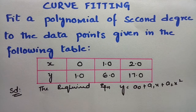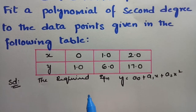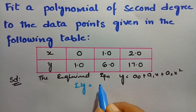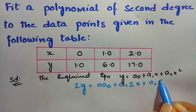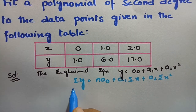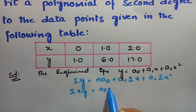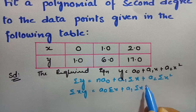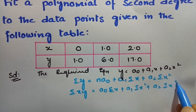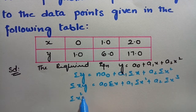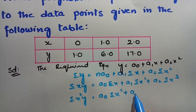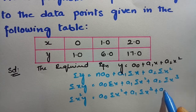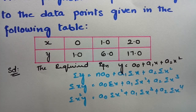In order to find the values of a₀, a₁, and a₂, we have certain normal equations. The first is: Σy = n·a₀ + a₁·Σx + a₂·Σx². Multiplying by x gives: Σxy = a₀·Σx + a₁·Σx² + a₂·Σx³. And multiplying by x² gives: Σx²y = a₀·Σx² + a₁·Σx³ + a₂·Σx⁴. These are the three normal equations.